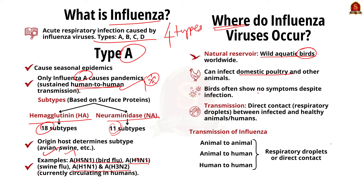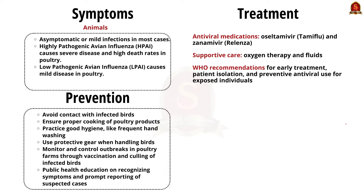However, avian influenza A viruses are very contagious among birds, and some can sicken and even kill certain domesticated bird species including chickens, ducks, and turkeys. Most cause asymptomatic or mild infection in birds; the range of symptoms depends on the virus properties. Viruses that cause severe disease and high death rates in poultry are called Highly Pathogenic Avian Influenza (HPAI). Viruses that cause mild disease in poultry are called Low Pathogenic Avian Influenza (LPAI).